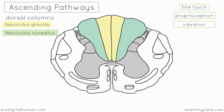How do you remember which one is medial and which one is lateral? In yellow we have the fasciculus gracilis and in green the fasciculus cuneatus. The way to remember this is that your arms are lateral to your legs. Since the fasciculus cuneatus carries fibres from the upper limb, and your arms are lateral to your legs, the fasciculus cuneatus is lateral to the fasciculus gracilis in the spinal cord.